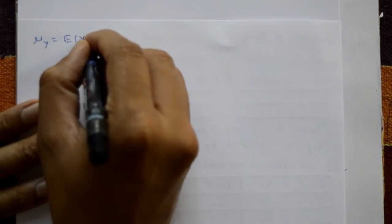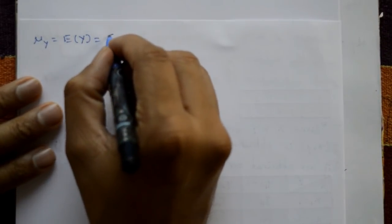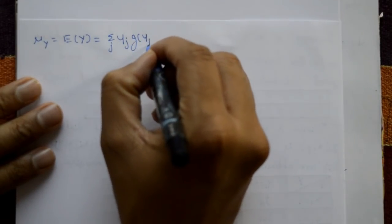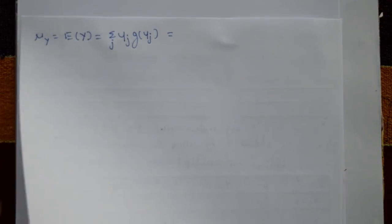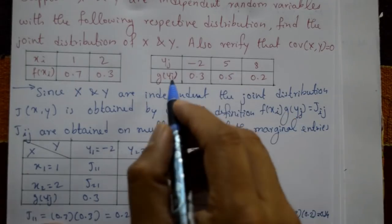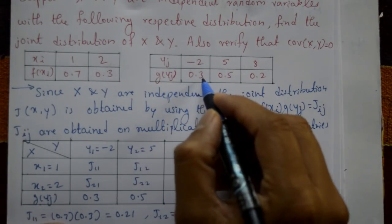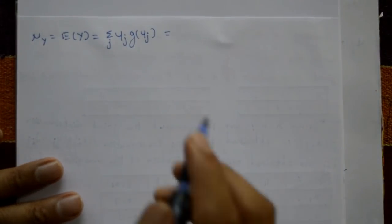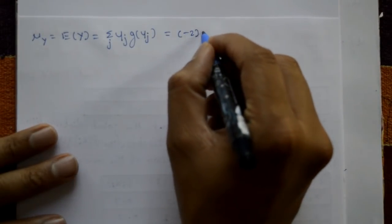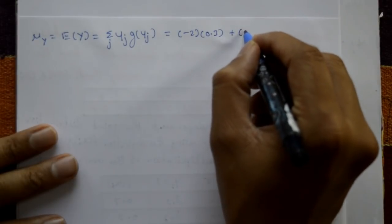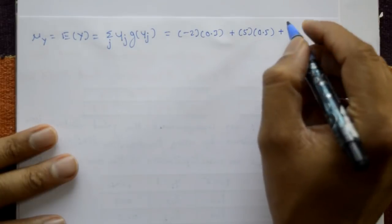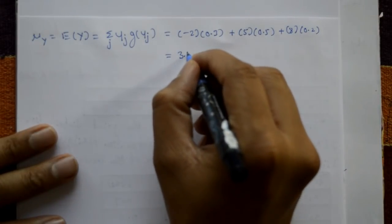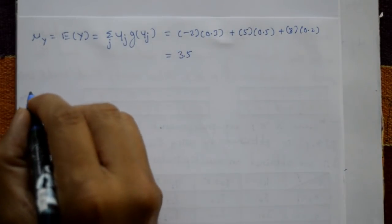Next, compute mu of Y, the expectation of Y: summation of yj × g(yj) = minus 2 × 0.3 + 5 × 0.5 + 8 × 0.2 = minus 0.6 + 2.5 + 1.6 = 3.5.